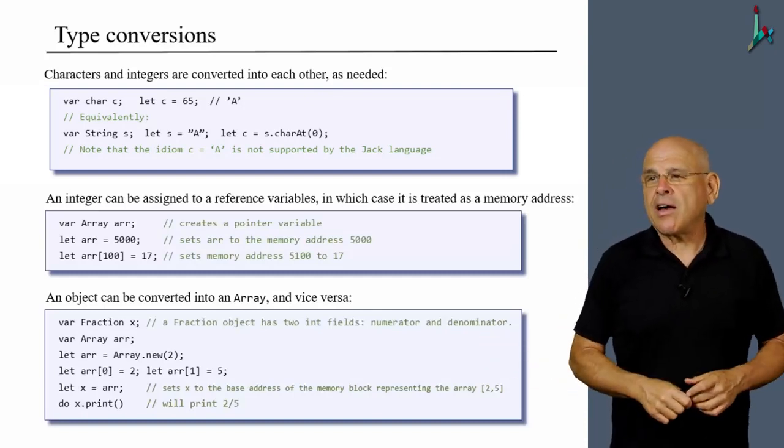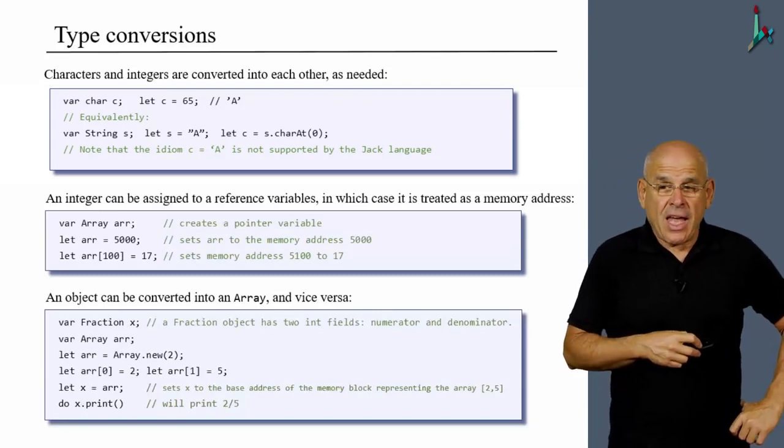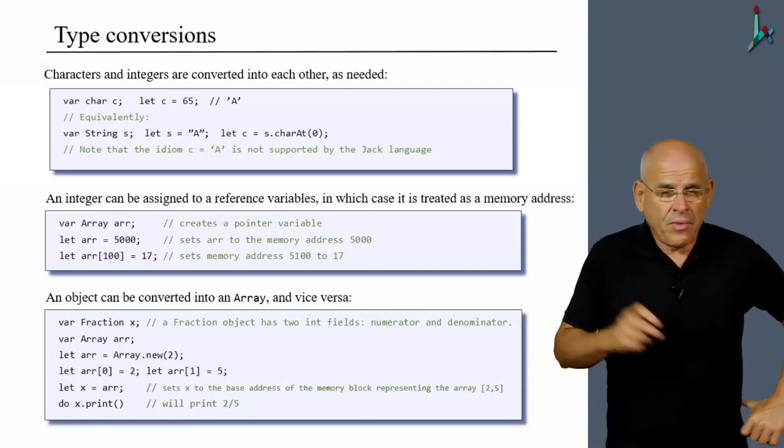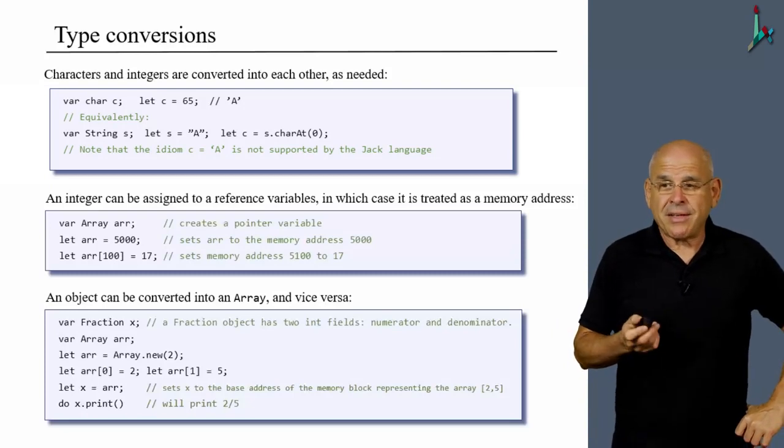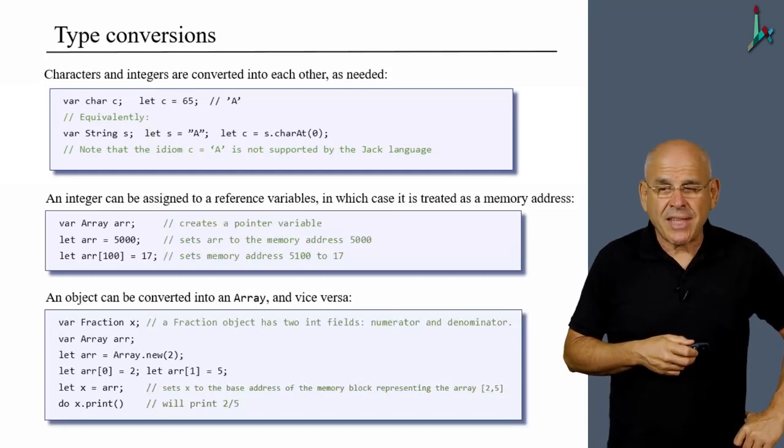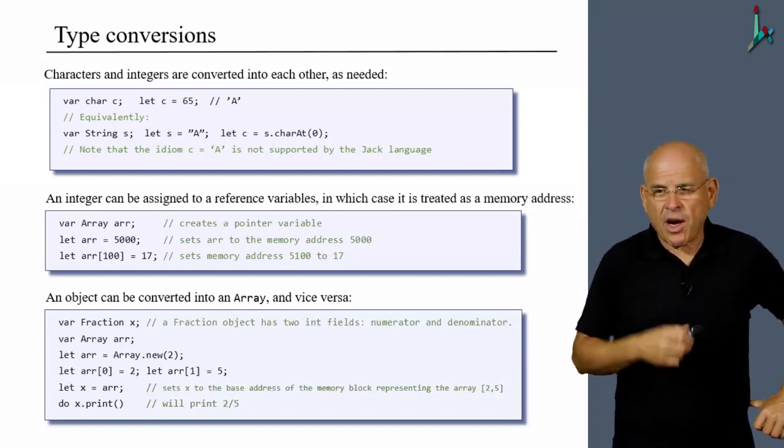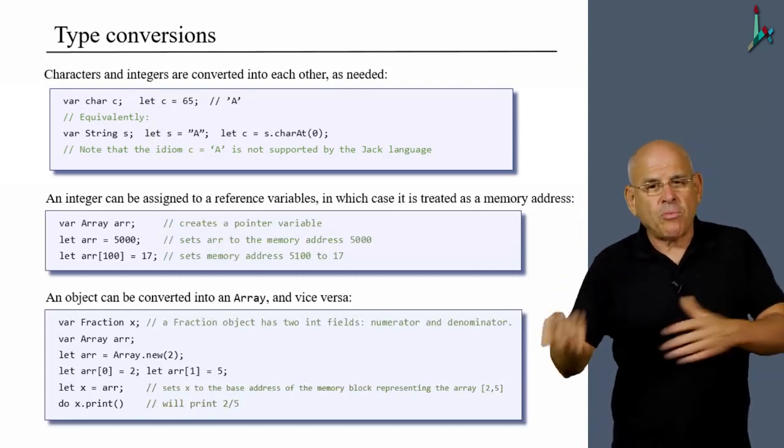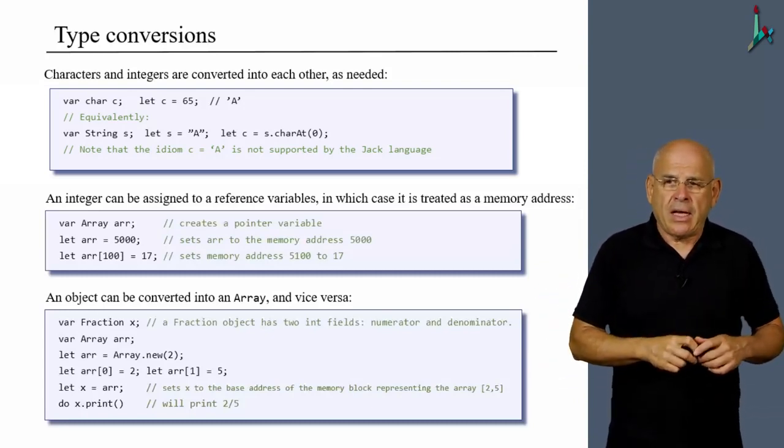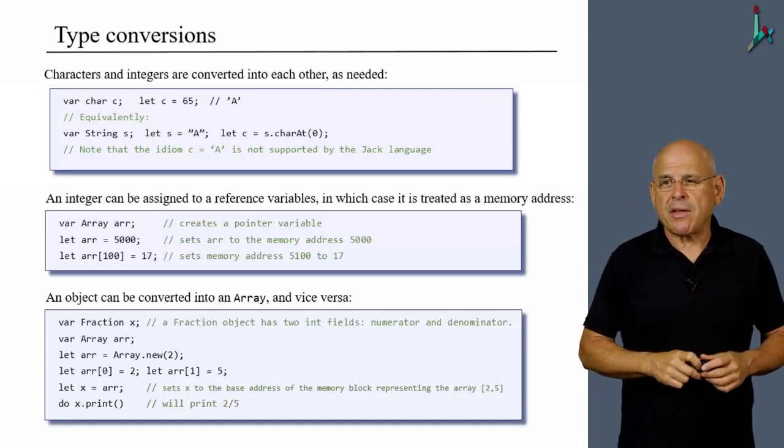So once again, quite a wild casting. And yet, it makes perfect sense. Because internally, arrays and objects are handled almost the same. That's why in languages like Java and C-sharp, you can easily serialize an object into an array and so on. So in Jack, this relationship is more explicit, I think, more clear.